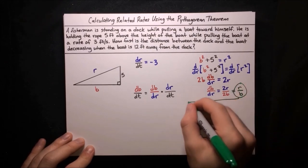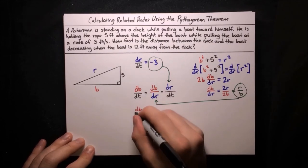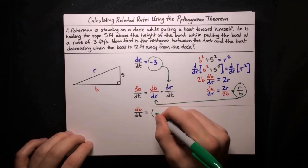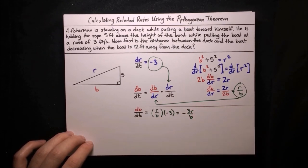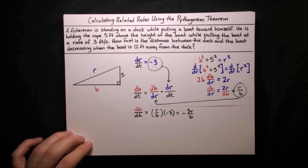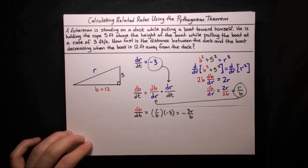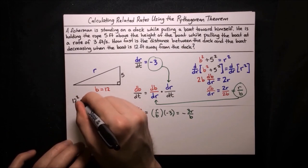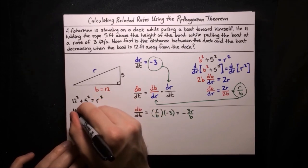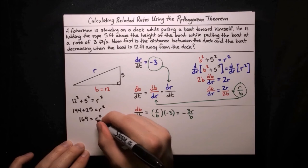Substituting in, db/dt = (r/b) × (−3) = −3r/b. We want the value when b = 12, so we plug in 12 for b. We still need r. Using the Pythagorean theorem with b = 12: 12² + 5² = r², so 144 + 25 = r², giving 169 = r², and r = 13.